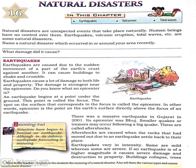Human beings have no control over natural disasters. We can't create natural disasters and we can't stop any natural disaster. Earthquakes, volcanic eruptions and tidal waves are some examples of natural disasters.